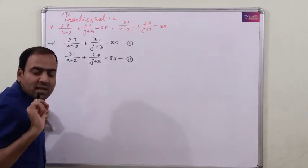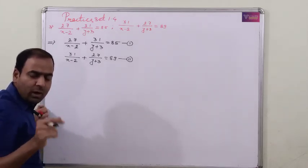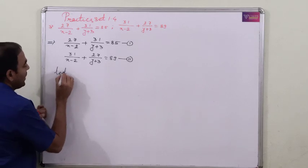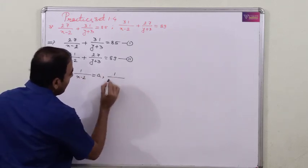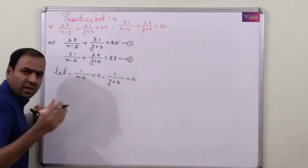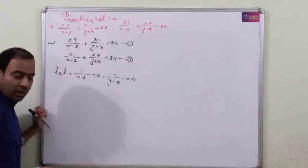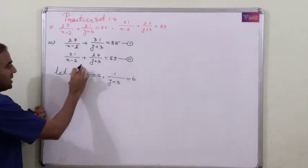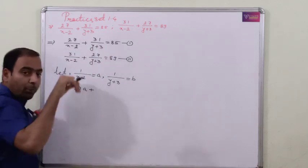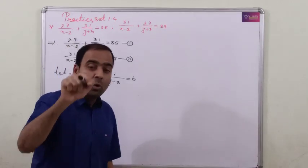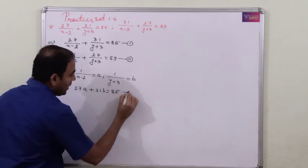Here, the variables x and y are in the denominator position, so we need to consider substitute variables. Let 1 upon (x minus 2) be 'a' and 1 upon (y plus 3) be 'b'. So 27 upon (x minus 2) means 27 times 1 upon (x minus 2), which becomes 27a. And 31 upon (y plus 3) becomes 31b. So our third equation is: 27a plus 31b equals 85.